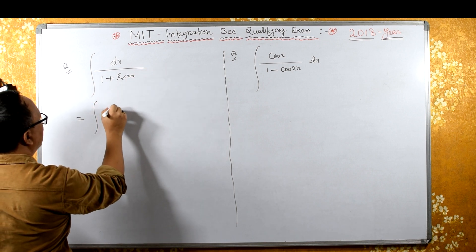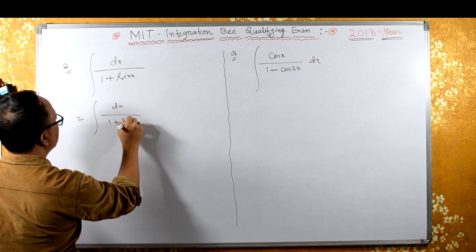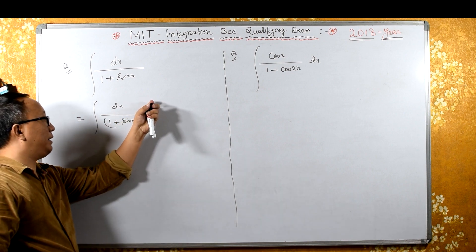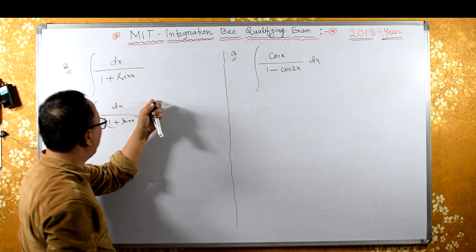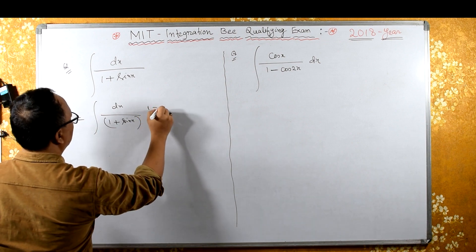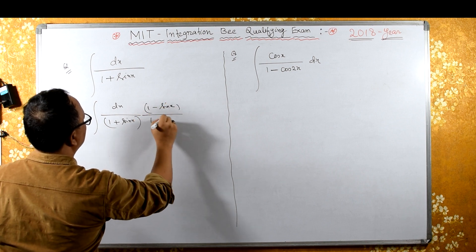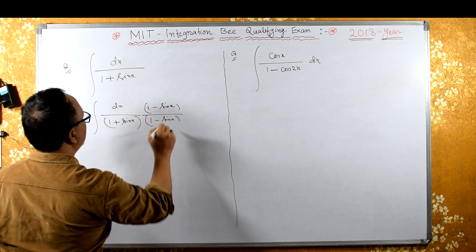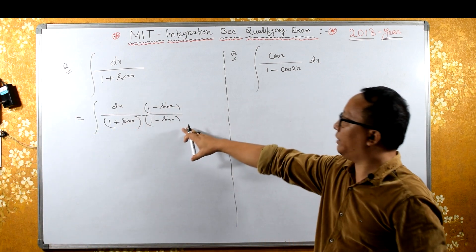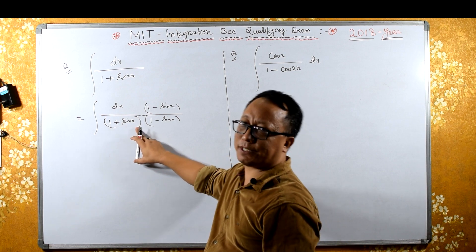We have the integral of dx/(1 + sinx). Multiplying top and bottom by (1 - sinx): the denominator becomes (1 + sinx)(1 - sinx), which is a² - b² form, giving us 1 - sin²x. The numerator becomes (1 - sinx)dx.